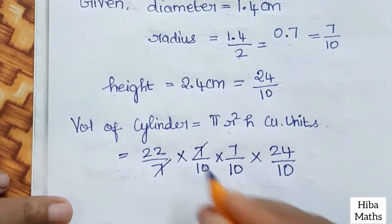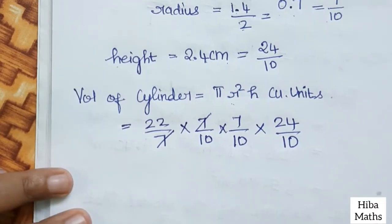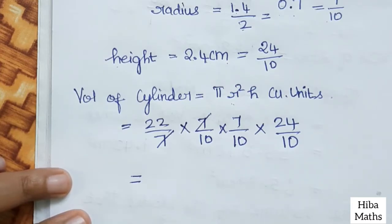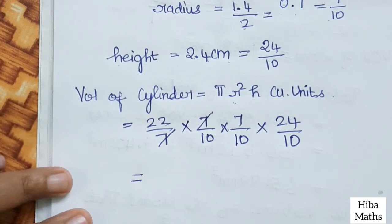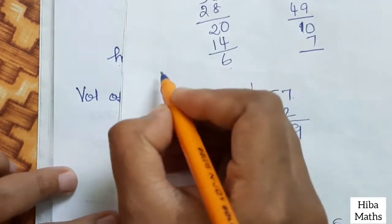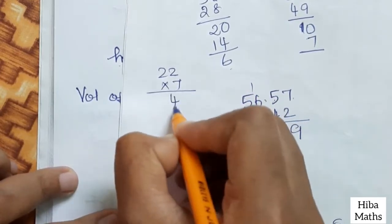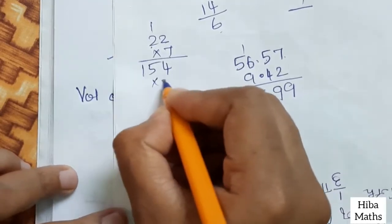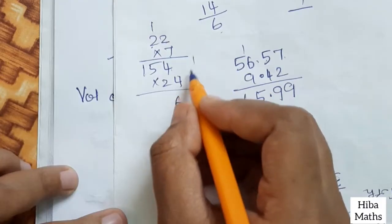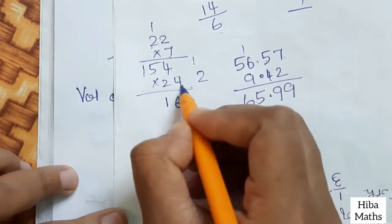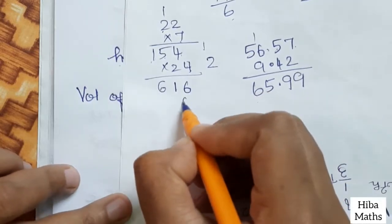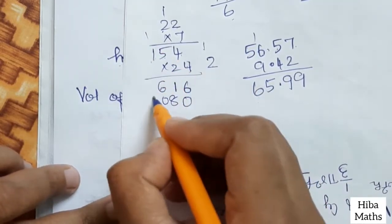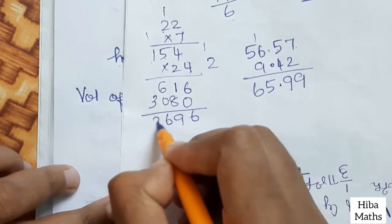Now we cancel common factors and divide. Calculating 22 × 7 × 24 over the denominators: 22 into 7 gives intermediate steps, then multiplying by 24. The result after dividing by 1000 gives the volume of the cylinder as 3.696 cm³.